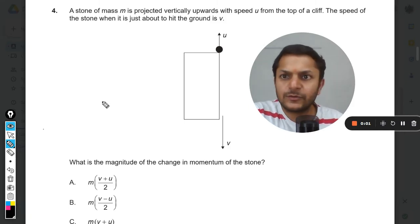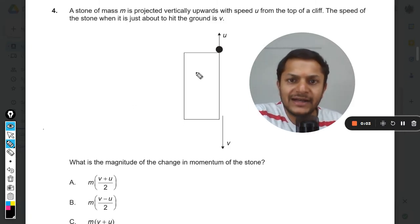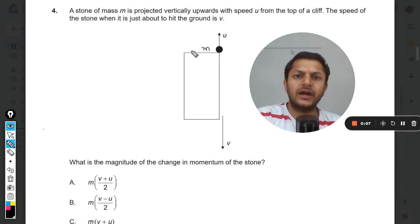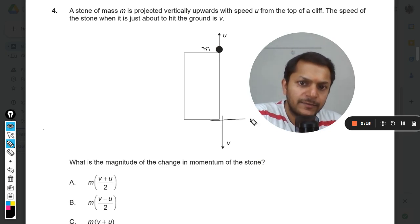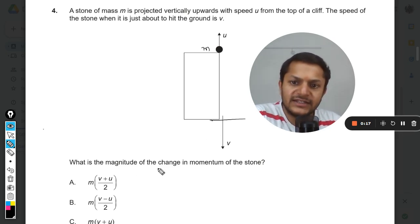Okay dear students, let us see what is there in this question. A stone of mass m is projected vertically upwards with speed u from the top of a cliff. The speed of the stone when it is just about to hit the ground is v. What is the magnitude of change in momentum of the stone?